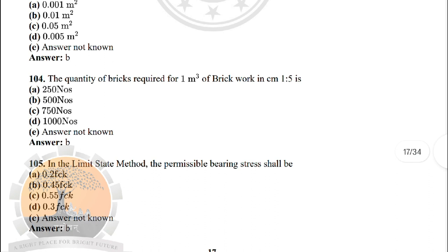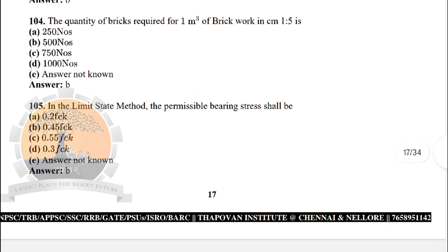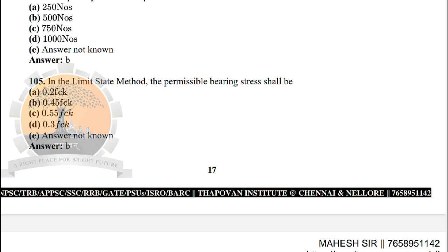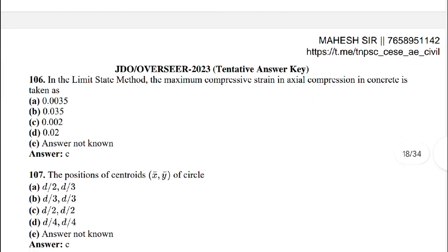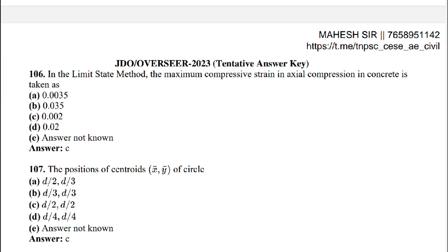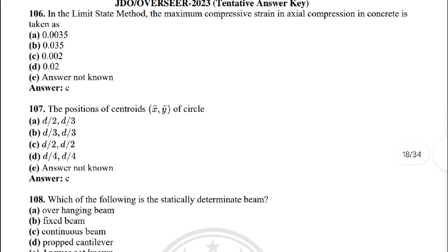Next: the quantity of bricks required for one m³ of brickwork in cement mortar 1:5 — the correct answer is option B: 500 numbers. In the limit state method, the permissible bearing stress shall be — option B: 0.45 fck. The maximum compressive strain in axial compression in concrete is taken as — option C: 0.002.